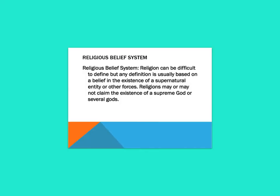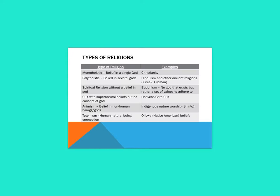Religion can be difficult to define, but any definition is usually based on a belief in the existence of supernatural entities or other forces. Religions may or may not claim the existence of a supreme god or several gods. When it comes to identifying the different types of religion, we need to look at the definitions and really get some contextualised information about these different religious sects and systems.